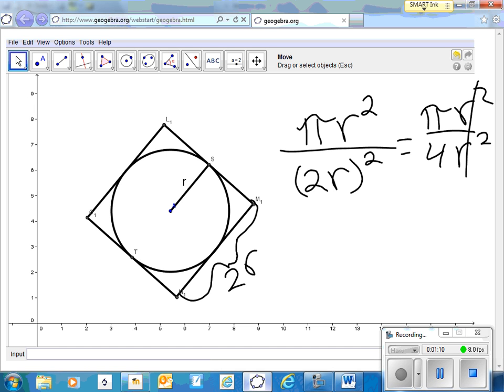So the ratio of the areas of the circle inside the square to the area of the square is pi compared to four.